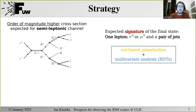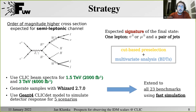We now take a different approach and consider the semi-leptonic final state, which offers one order of magnitude higher cross sections, but is only possible in the charged production channel. The expected signature will be one lepton (electron or muon) and a pair of jets. For the analysis, we use a simple cut-based pre-selection followed by a multivariate analysis based on boosted decision trees. We use CLIC beam spectra for 1.5 and 3 TeV, assuming total integrated luminosities of 2 and 4 inverse attobarns respectively. Samples were generated with Whizard 2.7. For the detector response simulation, we used full simulation based on DD4hep for five selected scenarios, then extended the analysis to the full set of 20 benchmark scenarios using fast simulation methods.